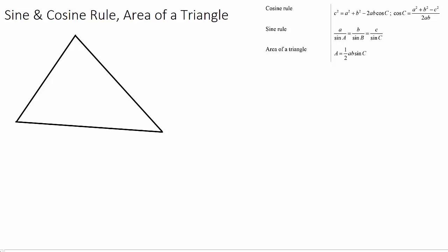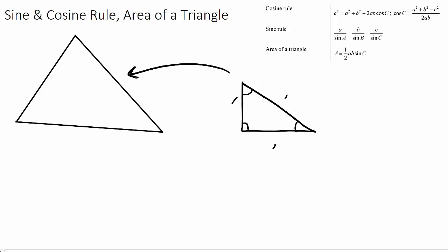When we first looked at triangles, we would have looked at right-angled triangles. If we wanted to work out the angles or the side lengths in right-angled triangles, we could have used SOHCAHTOA — which is sine, cosine, tan — or Pythagoras. But then we moved on to non-right-angled triangles, like the one we have here. To work out various angles and side lengths, we need some formulas. That's what the cosine rule and sine rule are — they help us find angles and side lengths of non-right-angled triangles.